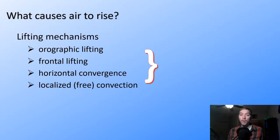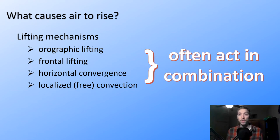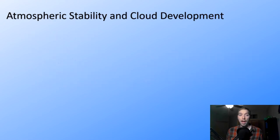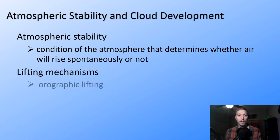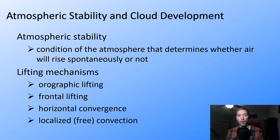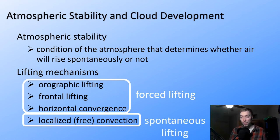It's important to note that these lifting mechanisms often act in combination — it's not any single mechanism in isolation. Many things can drive how these mechanisms lead to rising air parcels, and as you have rising air parcels, you have cooling air. Atmospheric stability is important here: atmospheric stability refers to the condition of the atmosphere that determines whether air will rise spontaneously or not. Orographic, frontal, and horizontal convergence lifting are forced lifting, whereas localized free convection is spontaneous lifting.